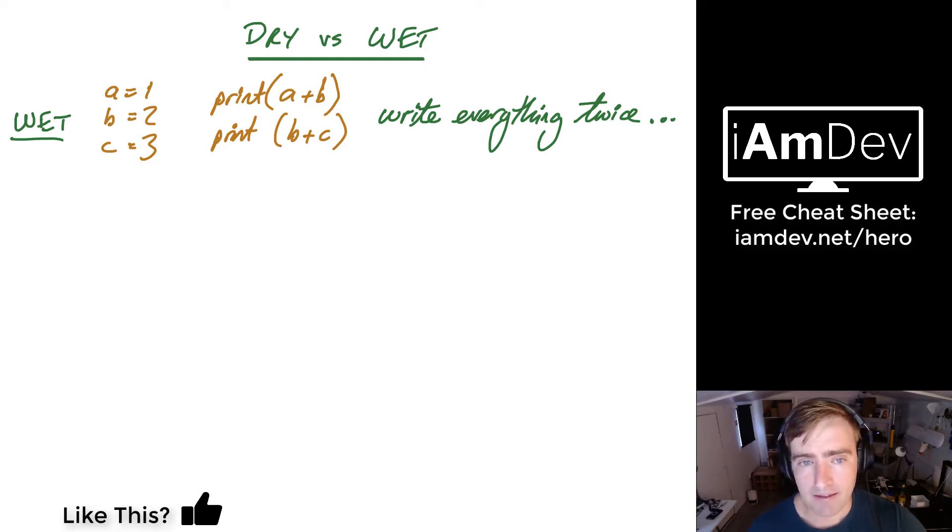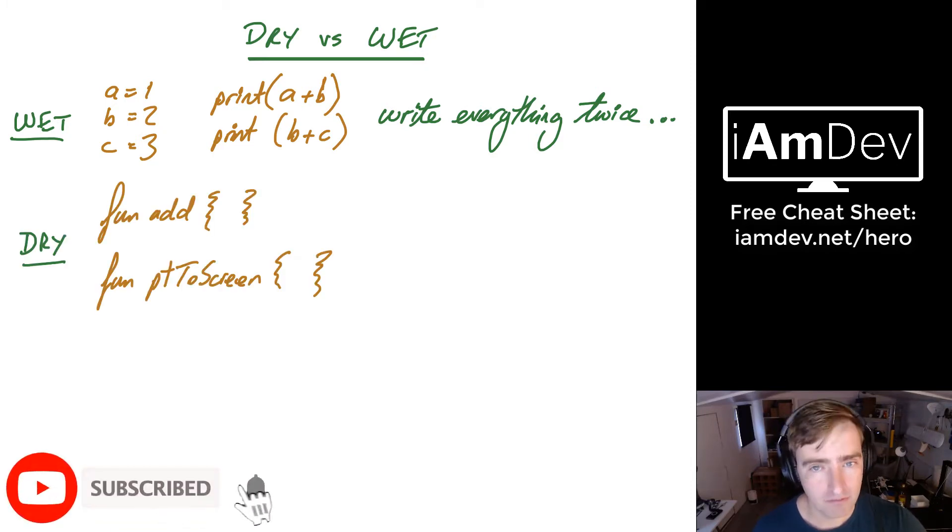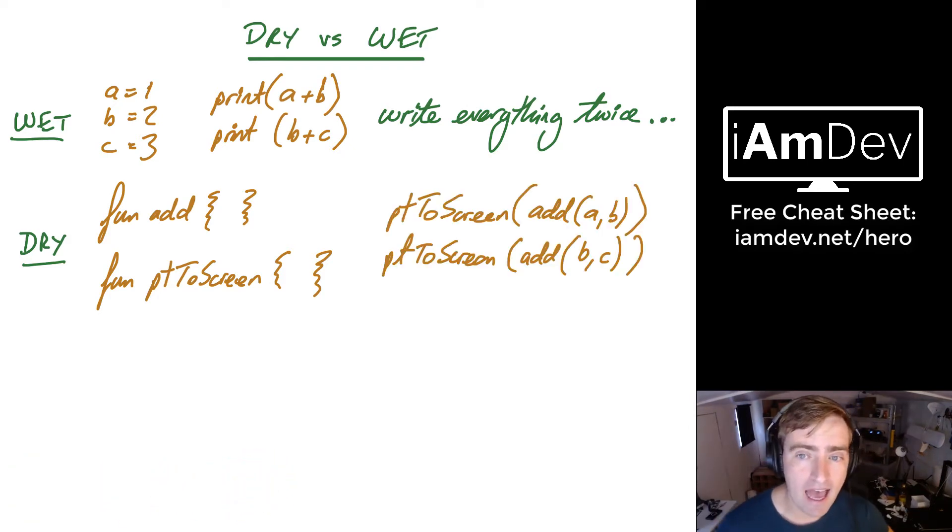DRY on the other hand, we would split these functions out. We would say function add and function printToScreen. Now if I was going to print things out, I would say printToScreen(add(a,b)), printToScreen(add(b,c)). But most beginners at this point say that's not right because you are repeating code. You're writing everything twice again and you've added extra functions into the mix.